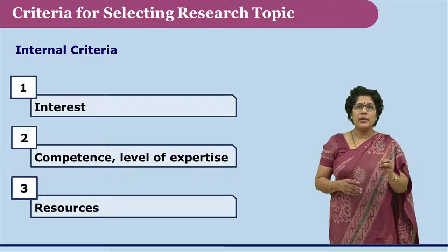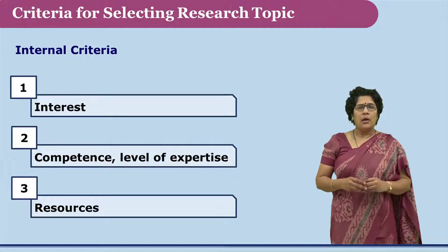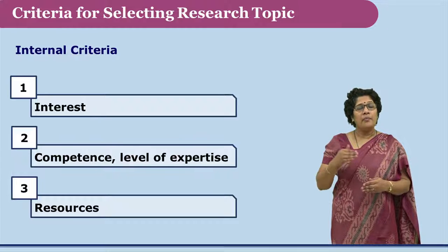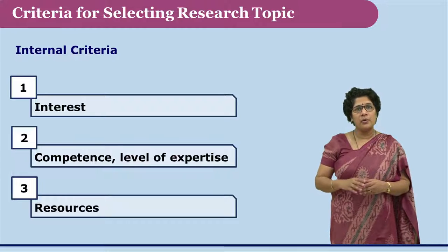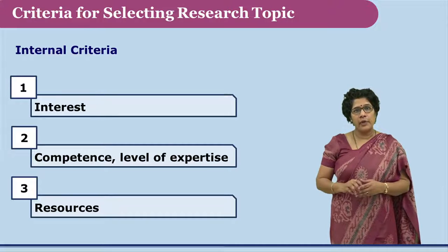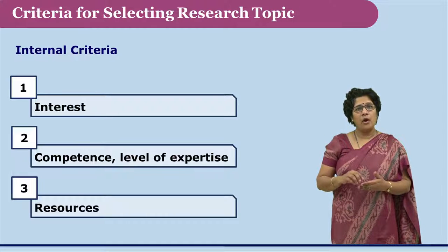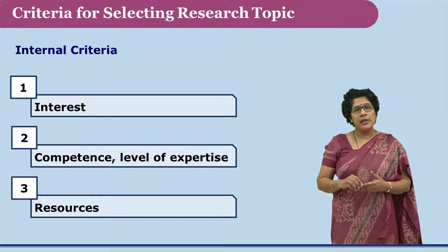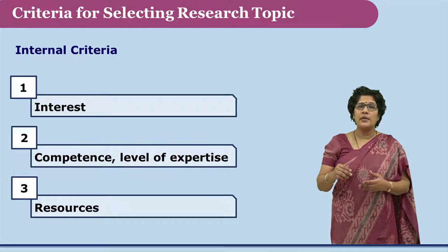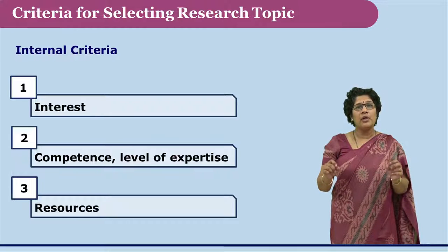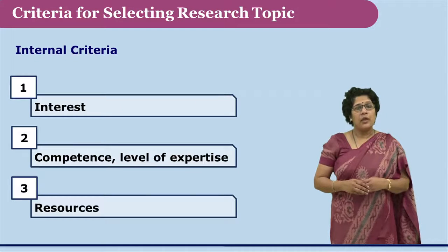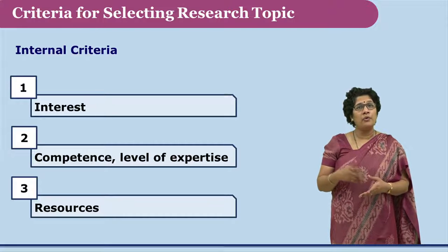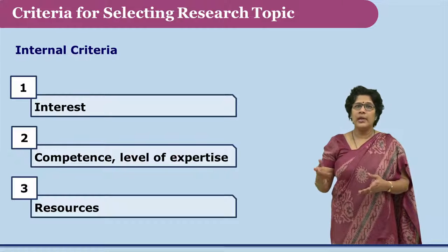The first internal criterion is interest in the area of research. The researcher should ask whether they are really interested in conducting this research and whether they really like this area of study. Since research is a rigorous process, a lot of energy goes into it, and if it is not the area of interest, the researcher may eventually lose interest and all efforts would go in vain.